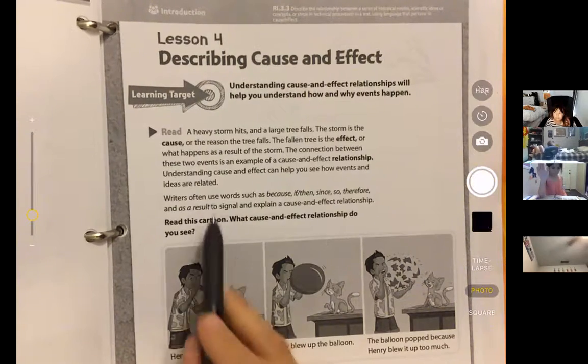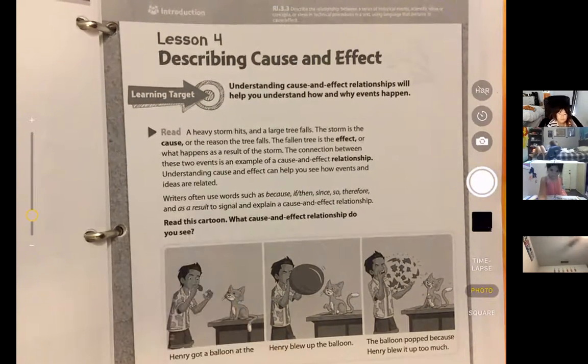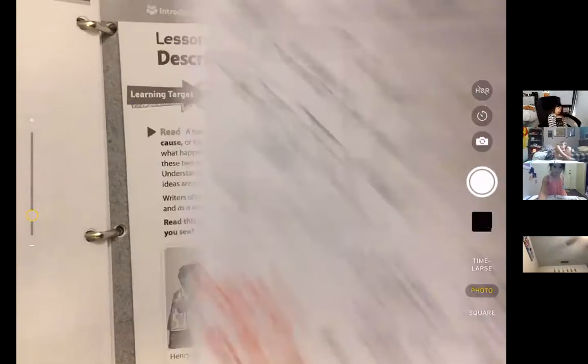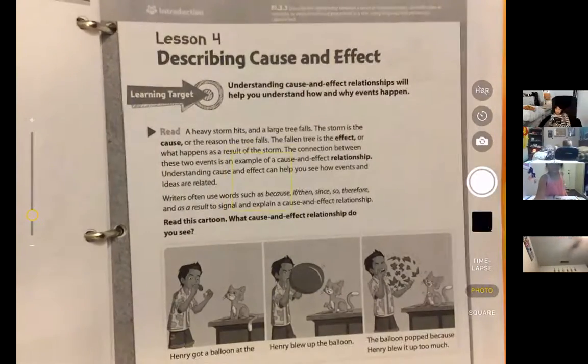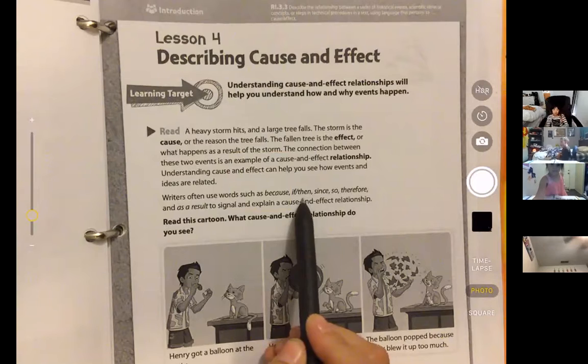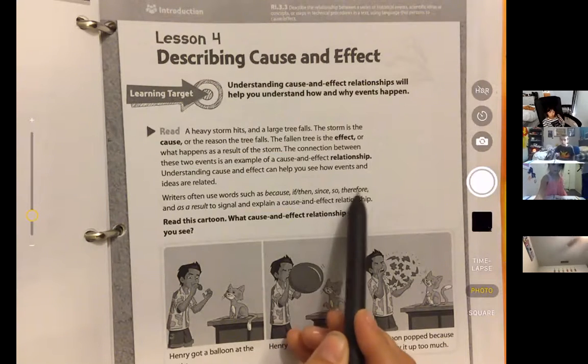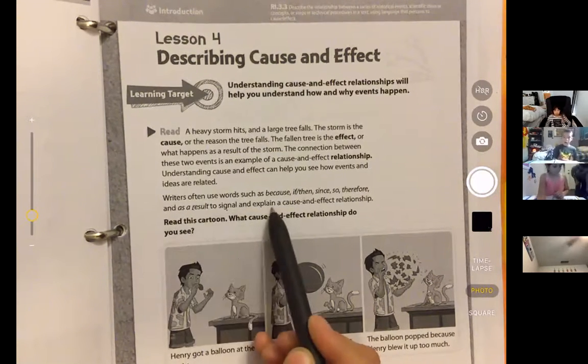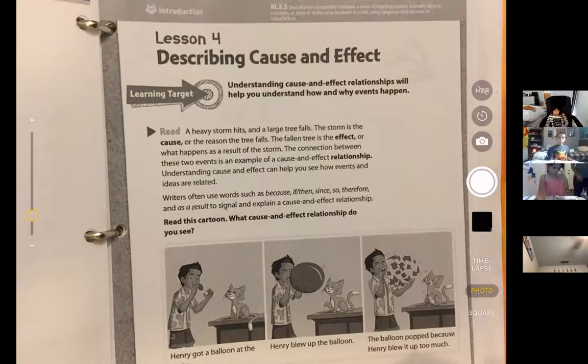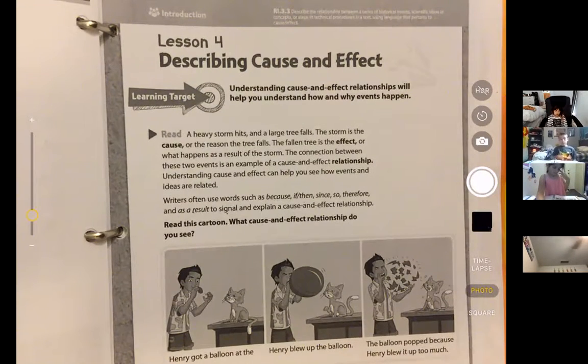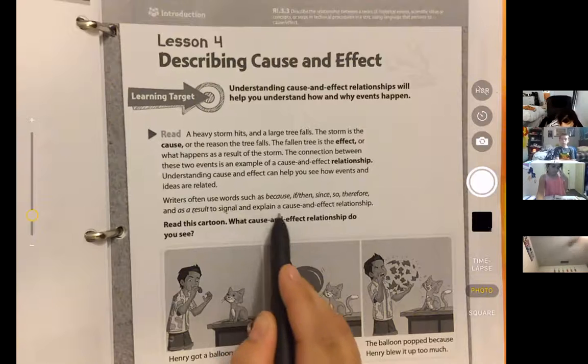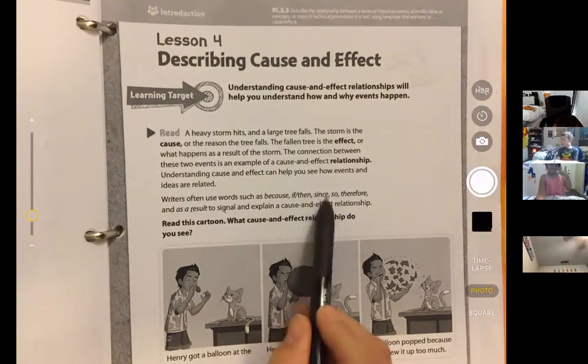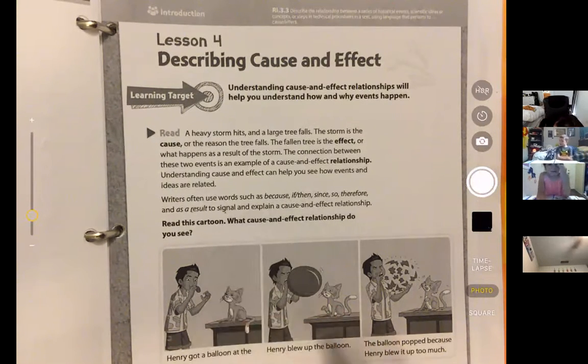So this next paragraph is just like what I said here, right? So it says, writers often use words such as because, if, then, since, so, therefore, and as a result, to signal and explain a cause and effect relationship. So these signal words, when you do a lot of your work this week, you're going to be using or seeing words like that.